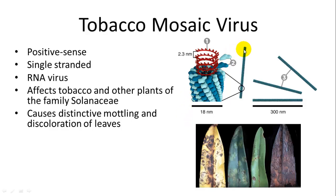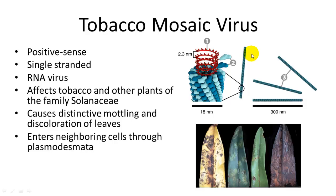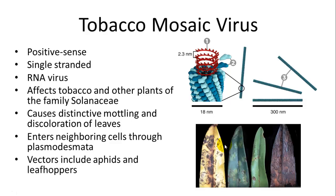The tobacco mosaic virus is rod-shaped, with a protein coat and RNA inside. It enters neighboring cells through plasmodesmata — once it gets into a leaf, it goes throughout different cells through those cytoplasmic connectors. Vectors that spread it from one plant to another include aphids and leafhoppers — these plant-eating insects help disperse it to other leaves.